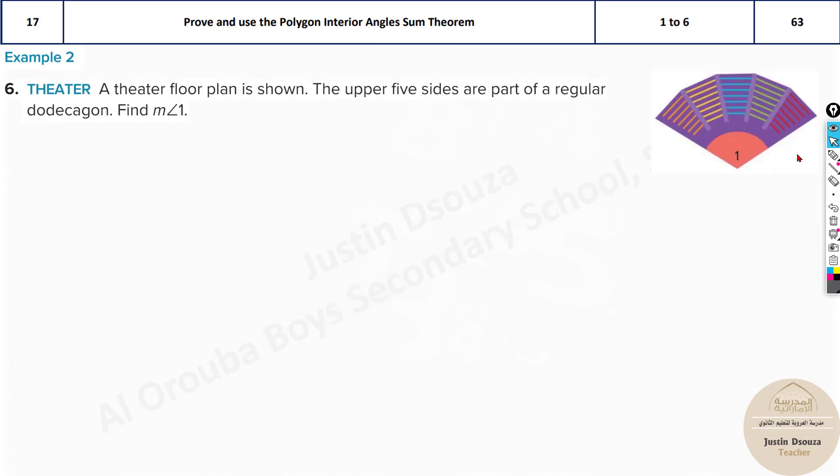This is the last problem, another real-world problem about a theater. A theater floor plan is shown over here. The upper five sides are part of a regular dodecagon. Decagon is 10 sides, so what is dodecagon? It's 12 sides. Find this measure. Now we must understand this is actually a dodecagon. So if you complete it, these angles are belonging to dodecagons. What we do now is we use the sum of interior angles, n minus 2 multiplied by 180 degrees, for dodecagon. Or you can take it as 1, 2, 3, 4. Let's do it for dodecagon first.